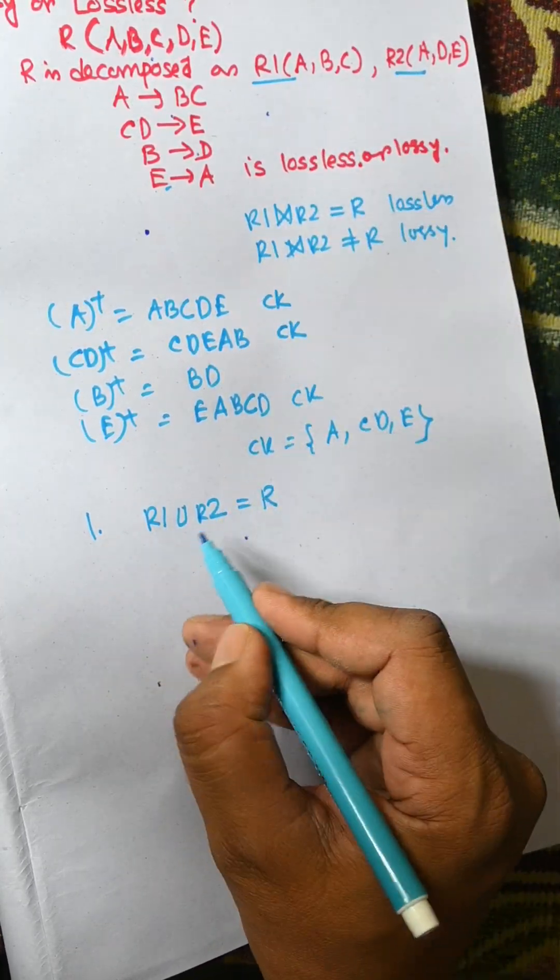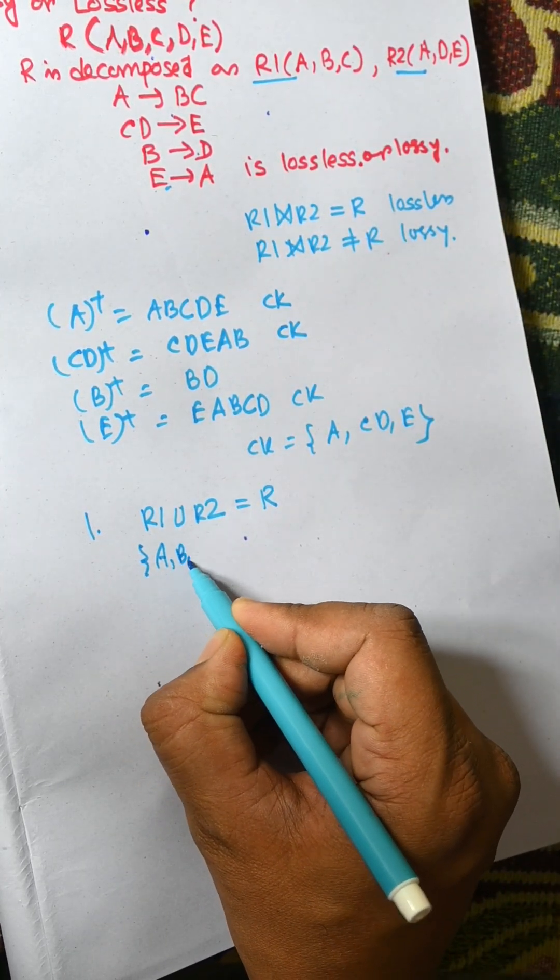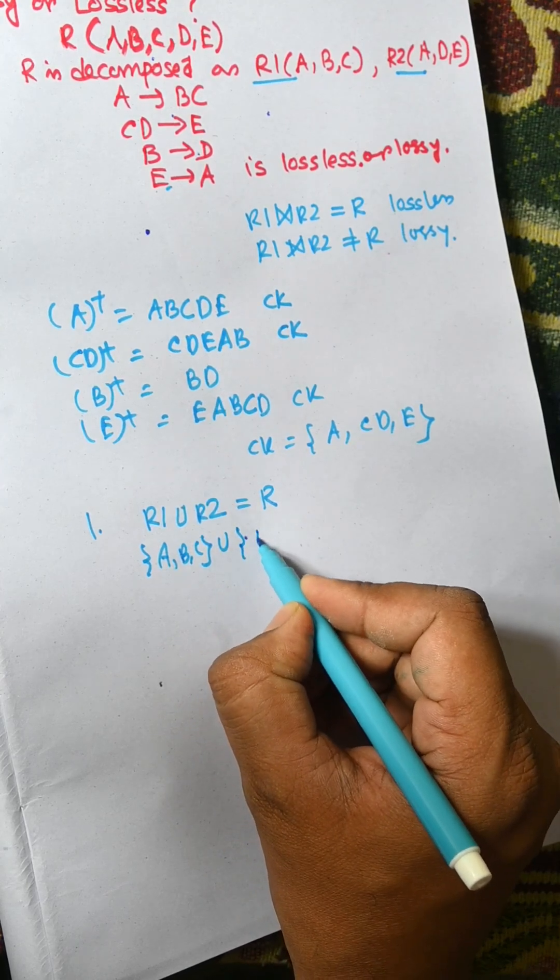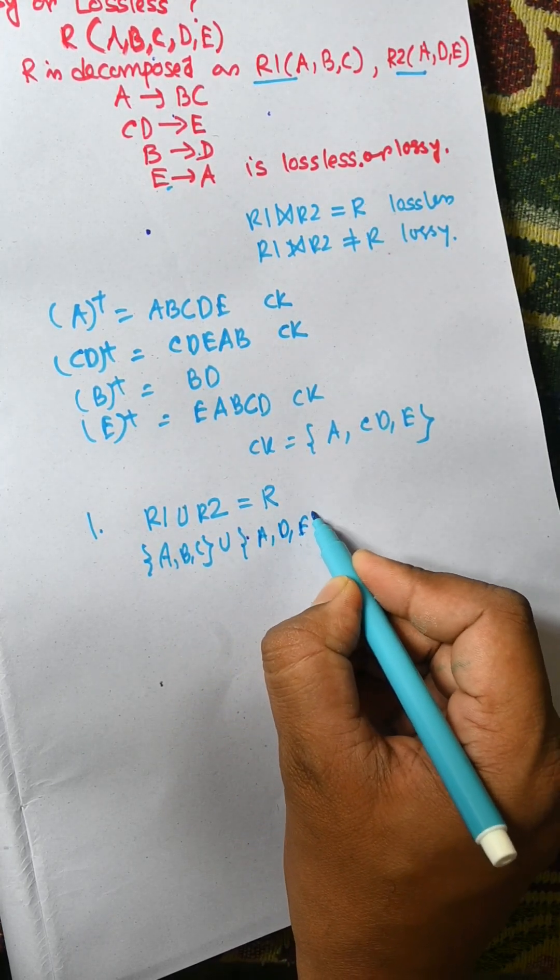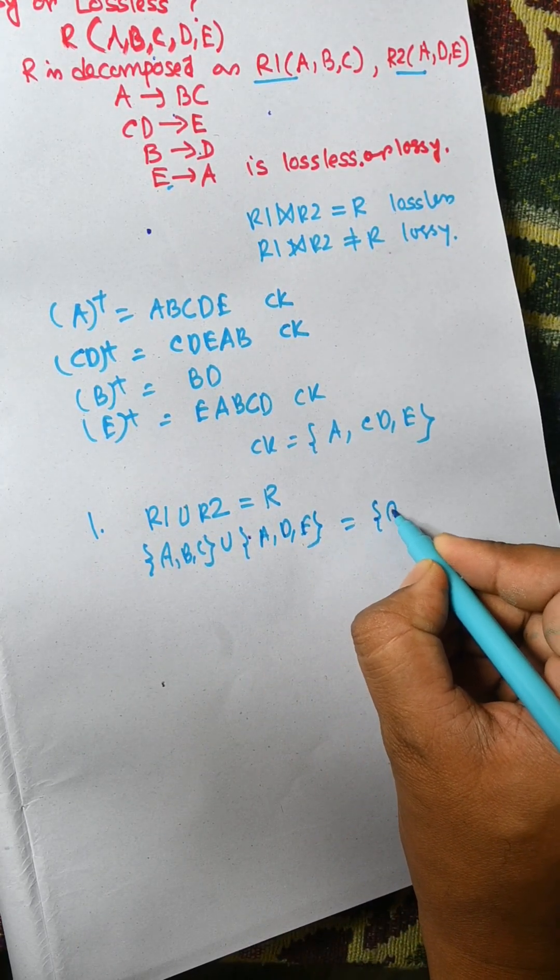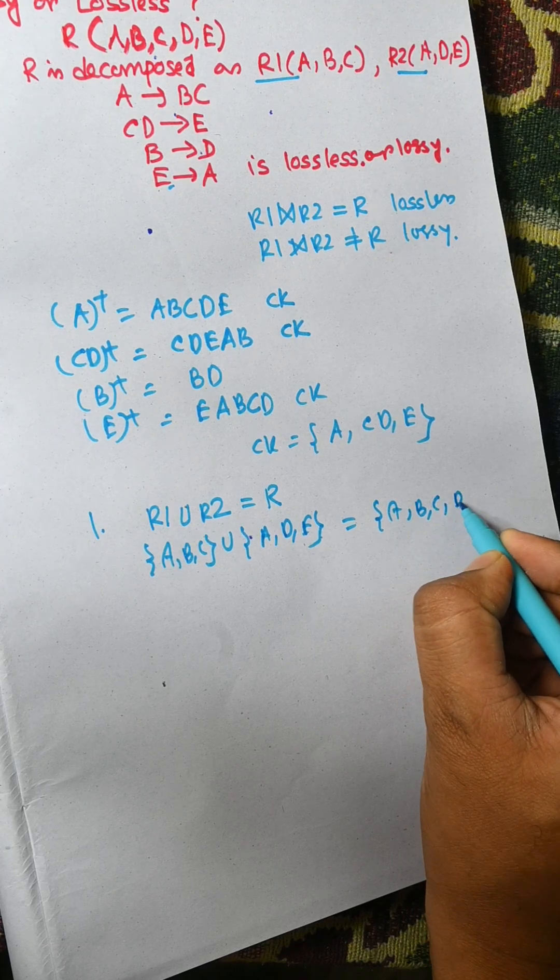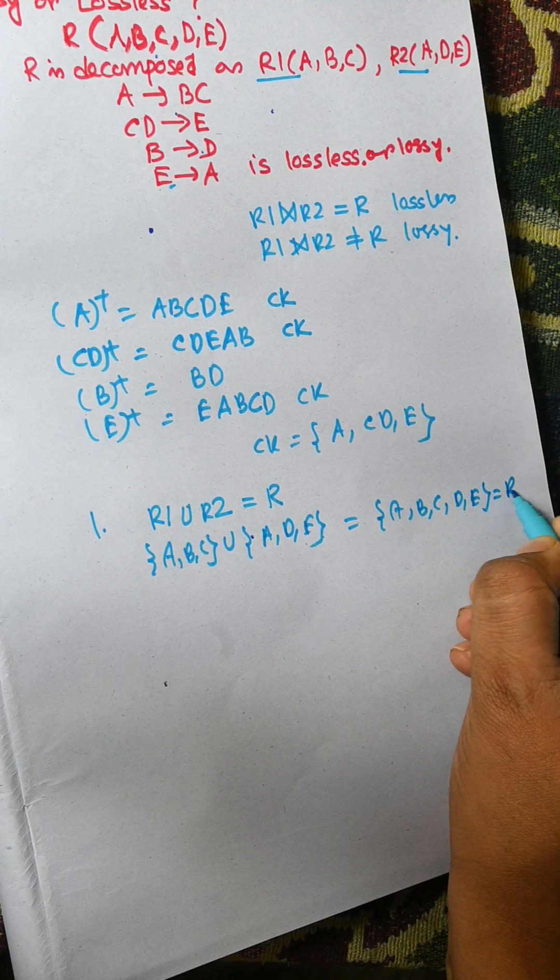R1 is ABC and R2 is ADE. The union of this is ABC and ADE, which equals ABCDE, which is equal to R. So the first rule is applied.